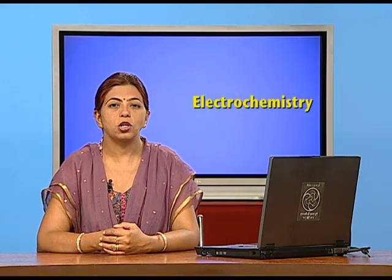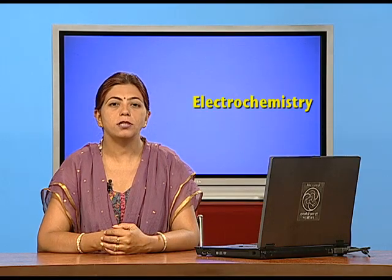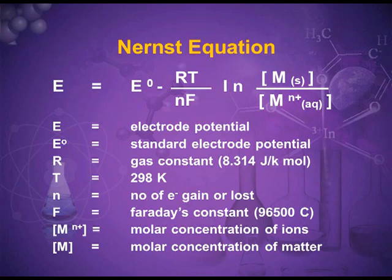Then we use the Nernst equation. The Nernst equation is: E equals E naught minus RT upon nF, natural logarithm of the concentration of the reduced state upon the concentration of the oxidized state.